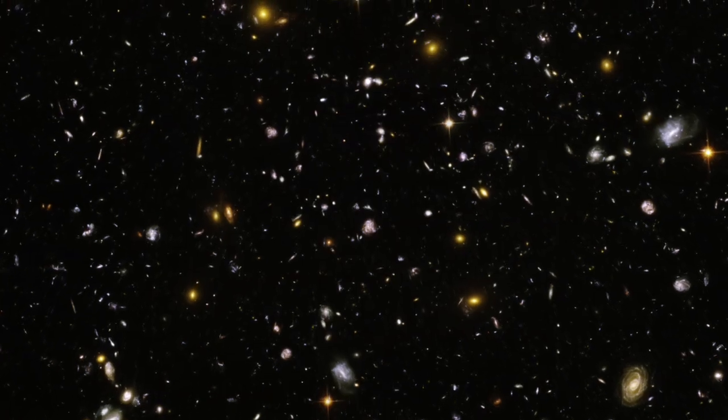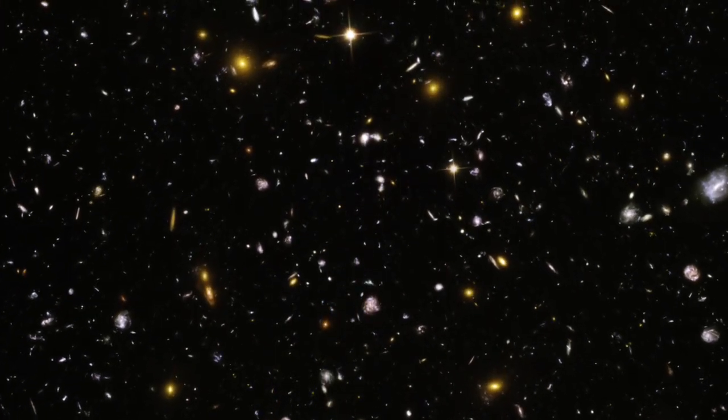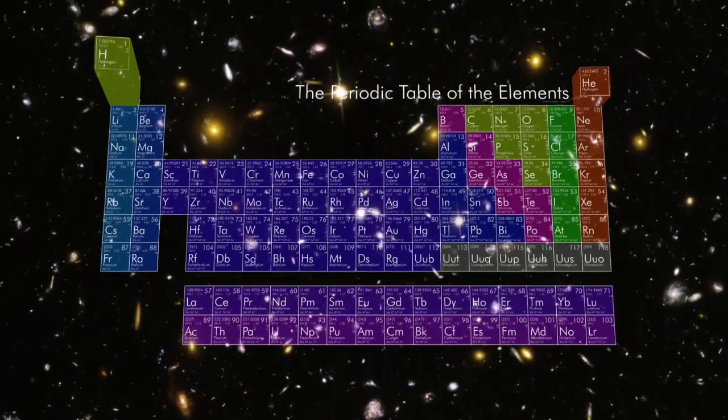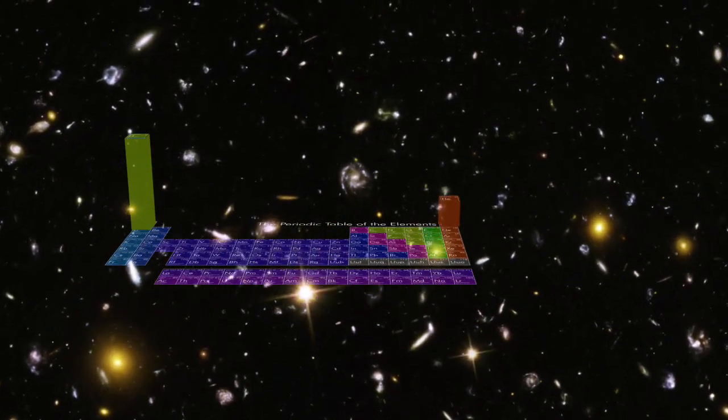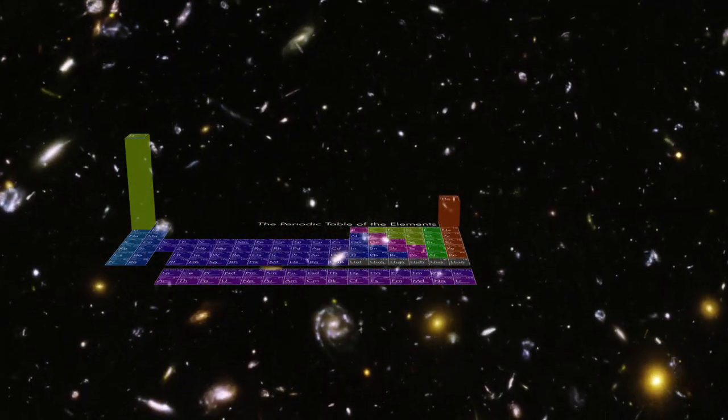What is the universe made of? The vast majority of it consists of the wispy cosmic lightweights hydrogen and helium. Everything else on the periodic table contributes only a small fraction of the whole.